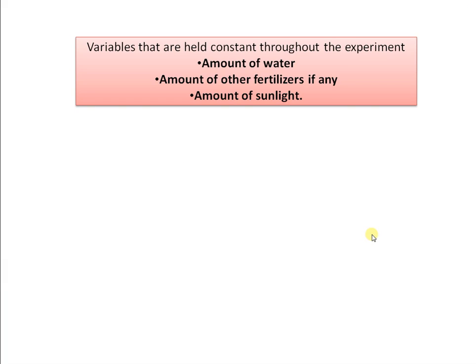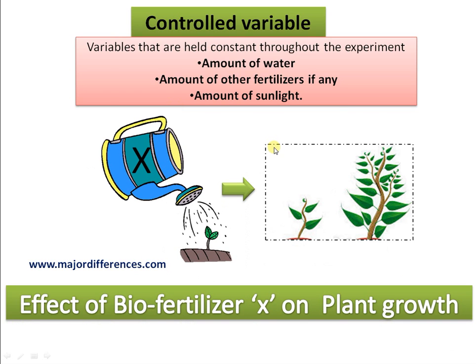The third type is the controlled variable — variables that are held constant throughout the experiment. Apart from the biofertilizer, there are many other parameters required for plant growth, like amount of water, amount of other fertilizers if needed, and amount of sunlight. All these variables should be kept constant; such variables are called controlled variables. They should be at the same value or same amount for all treatment and control groups.